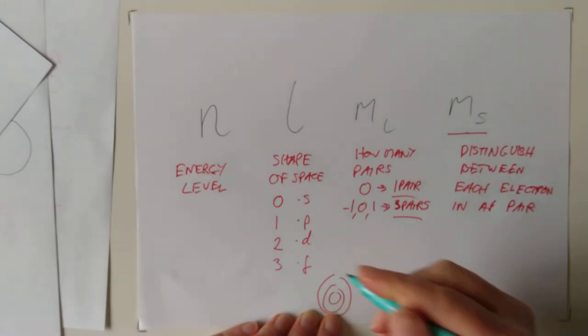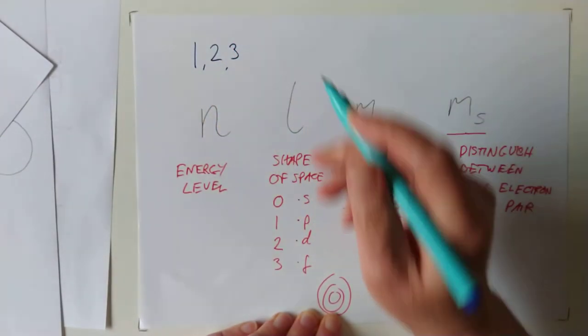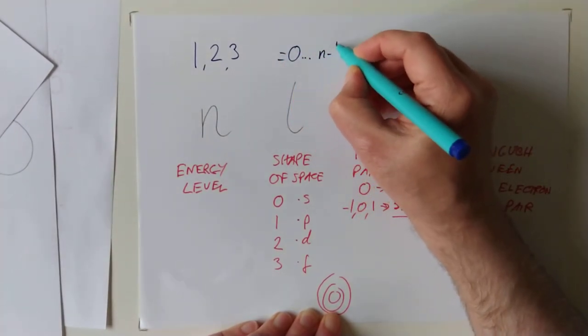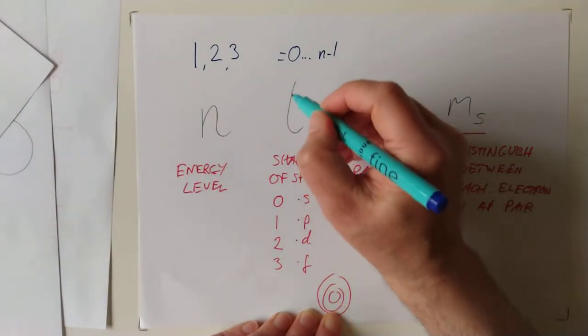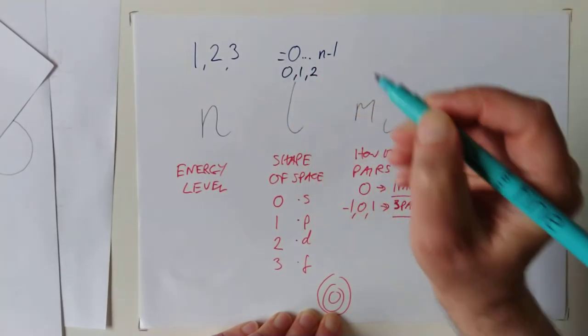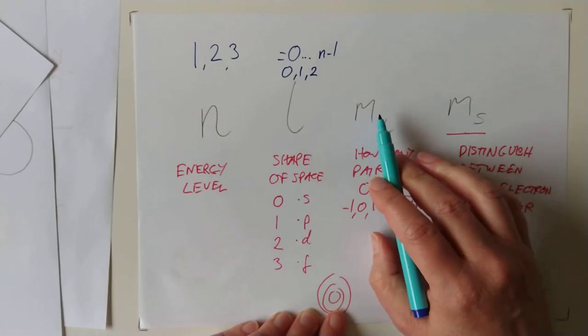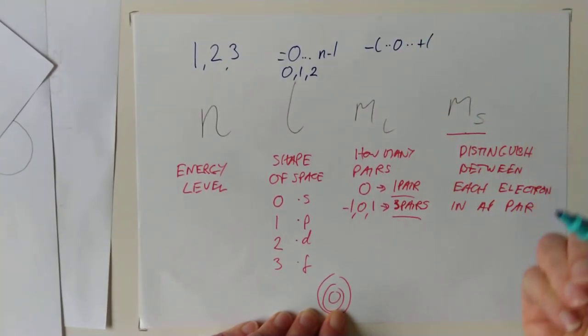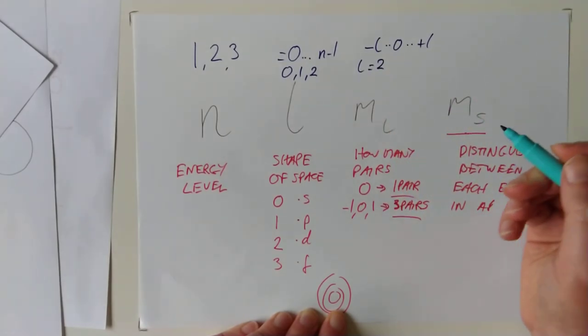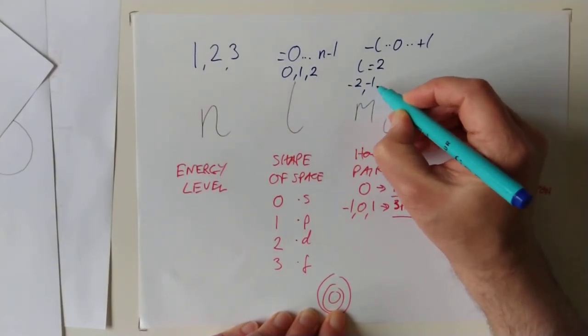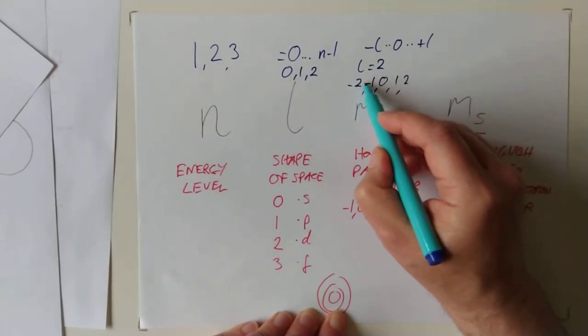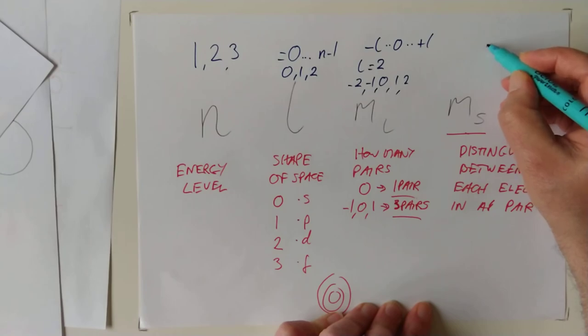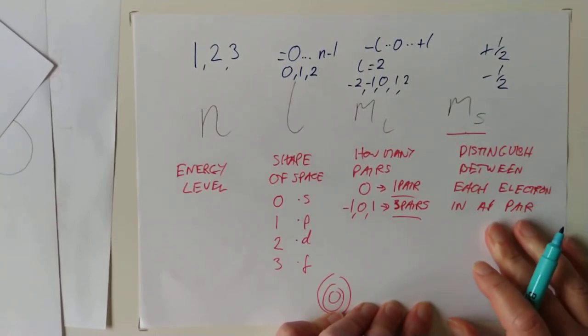Just in blue here, we can have the values. N starts at 1, and 2, and 3 goes up from there. Remember, L was equal to 0, up to n minus 1. So if n was 3, for example, then L could be 0, 1, or 2. ML was the negative of this, negative L, up through 0, up to positive L. So if L equals 2, for example, then we can have negative 2 for ML, negative 1, 0, 1, 2. So that's five values, so that would be five pairs of electrons. And lastly, this one is just for a change, nice and simple. It's positive 1 half or negative 1 half for the two electrons involved.